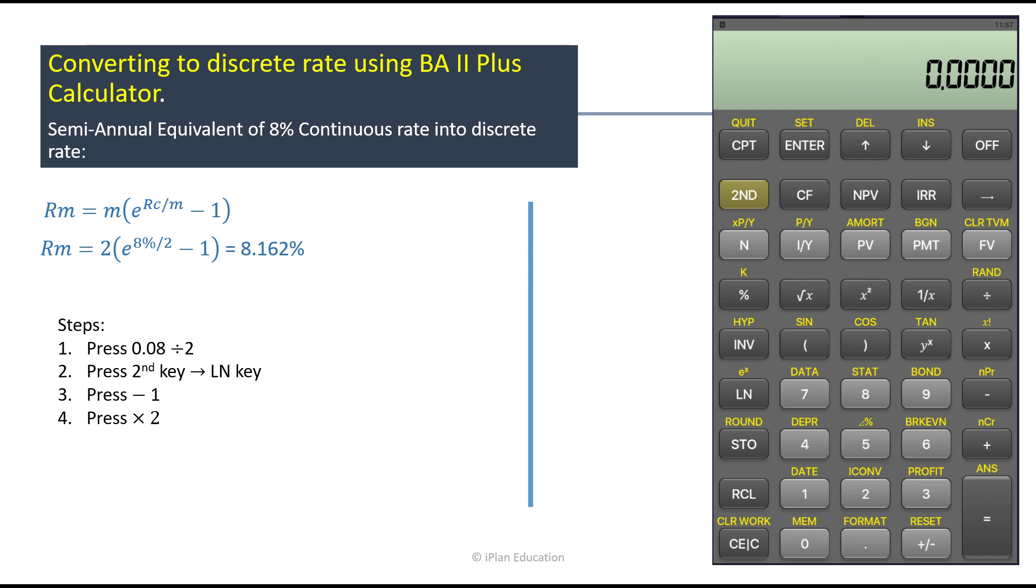Interest amount of 8% continuous rate and the interest amount of discrete rate should be same. Okay, so we have to have little higher discrete rate so that the amount of 8% continuous rate and the discrete rate matches.